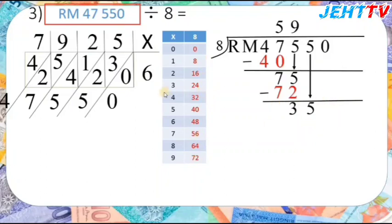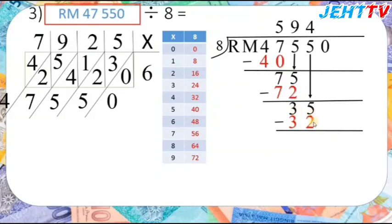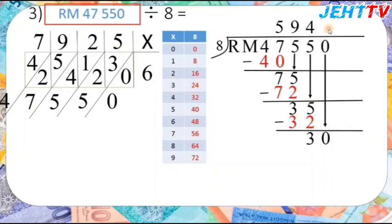Do we have 35 in the 8 times table? No, but we have 32 — less than 35. So 8 times 4 equals 32. Then 35 minus 32 equals 3. Bring down the 0 to get 30. Do we have 30? No — less than 30 is 24, so 8 times 3 equals 24. Then 30 minus 24 equals 6.